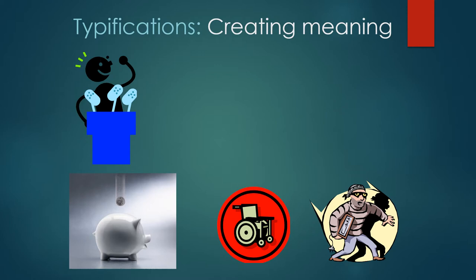There is a very good chance that as you went through those slides and looked at those words, the picture you had in your mind was very similar to the pictures that I showed you. They may have been slightly different because of your cultural background or your own personal experiences, but even if they were different, when I showed you the pictures you probably went, yeah, that works. And that's what typifications are. Typifications are shortcuts in our communication that allow us to be on common ground with each other. You've probably heard of stereotypes — stereotypes are a category within typification, so stereotypes are typifications, but not all typifications are stereotypes.